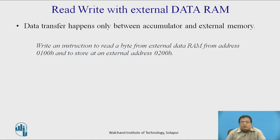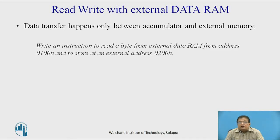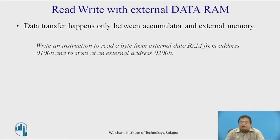When data transfer between the external memory and the 8051 takes place, this data transfer happens only between the accumulator and the external memory. For example, to read a byte from external data RAM at address 100h and store it at external address 200h — this is a memory-to-memory data transfer, which is not possible. So first, you have to read the data from external memory into the accumulator, and then from the accumulator transfer it again to the external memory.